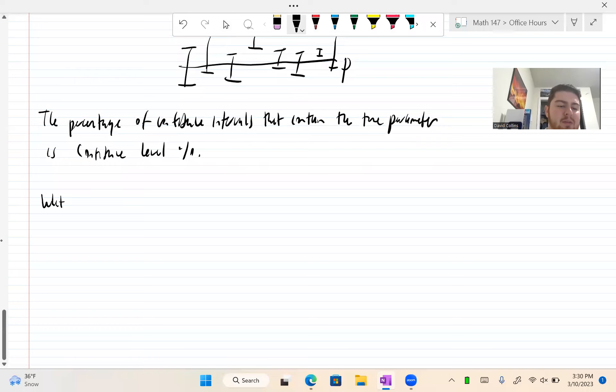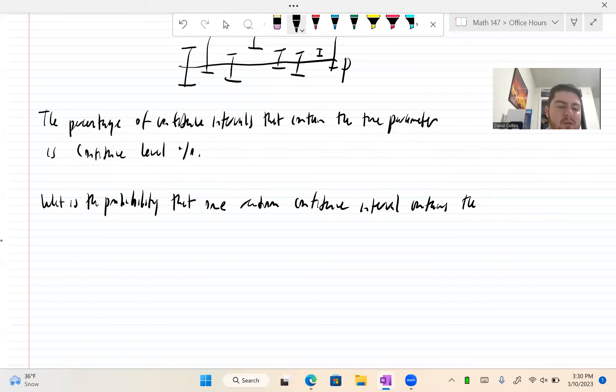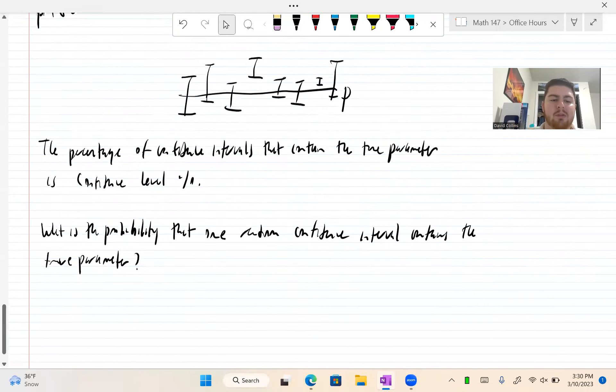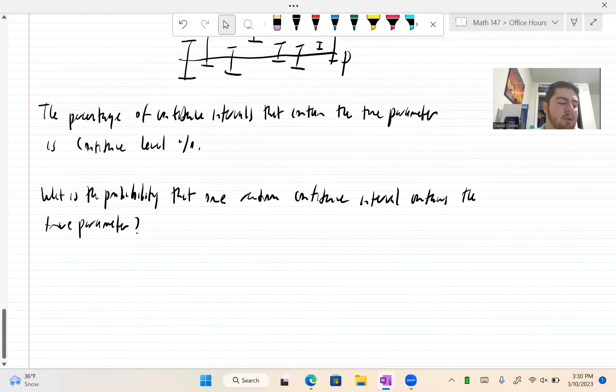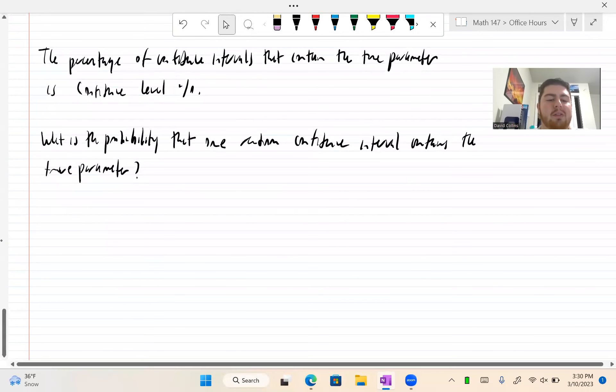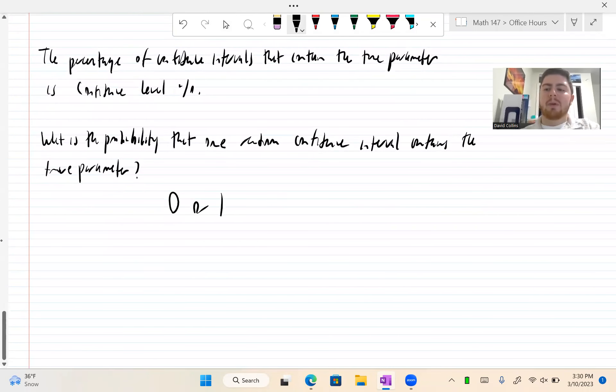But this begs the question, what is probability that one random confidence interval contains the true parameter? And I'm generalizing because we're going to talk about confidence intervals for means and stuff. This is always true. The theory is true. So you might be tempted to say the confidence level percentage. If we have a 90% confidence interval, the answer is 0 or 1. Because we never know. If we did know, we wouldn't even need a confidence interval. If we know the true population proportion, we don't need to do samples because we have the answer already.